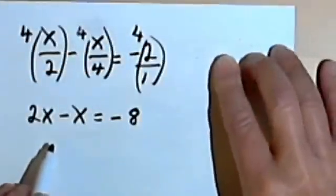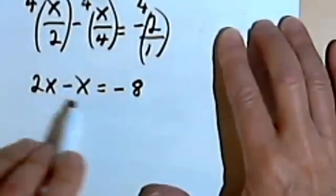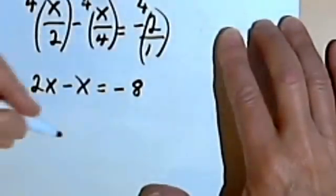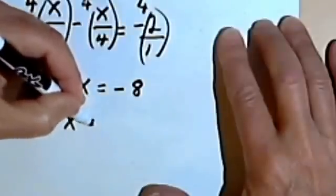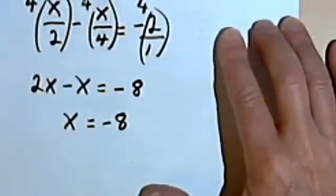So now I've got something really simple. I'm going to combine these two terms over here, the 2x and the negative x. That'll just give me an x, and x will equal negative 8.